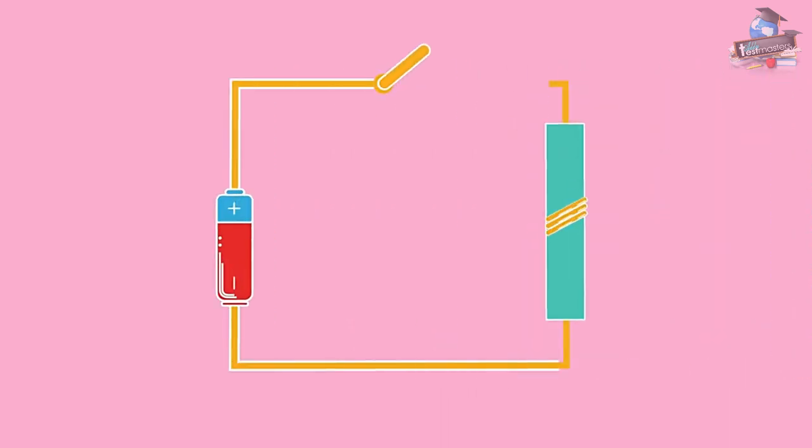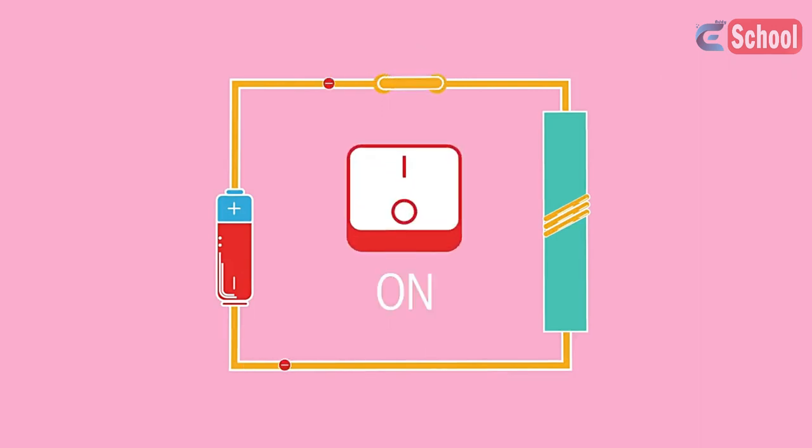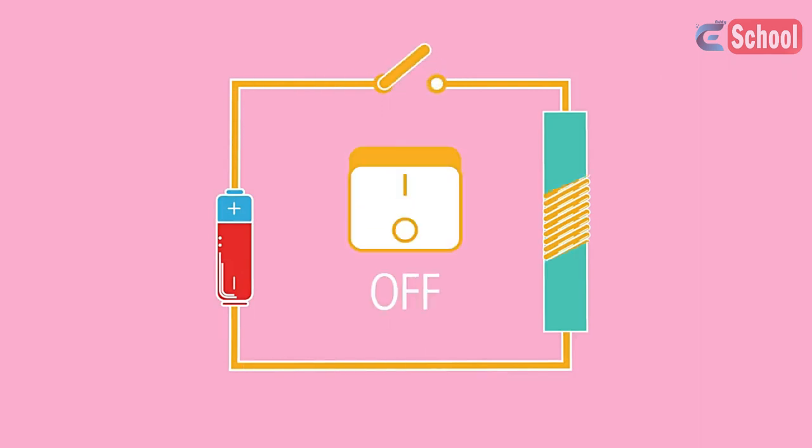So there you have it. Electromagnets are extremely useful, and we can switch them on and off, as well as control their strength.